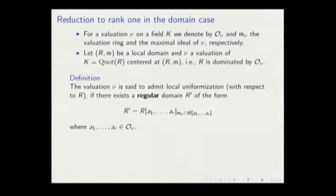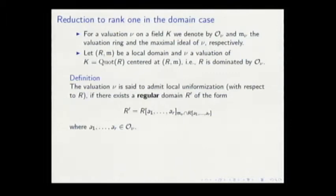Now I have to tell you what local uniformization is. We'll simplify because the main point is that we can bring it to very local settings. Hence we can talk about local rings—essentially the local rings of points of the variety. A valuation centered in a local domain is said to admit local uniformization if there exists a regular local domain of the form: I add finitely many elements of the valuation ring to this ring and localize at the center of the valuation, which is the intersection of the maximal ideal with this ring.